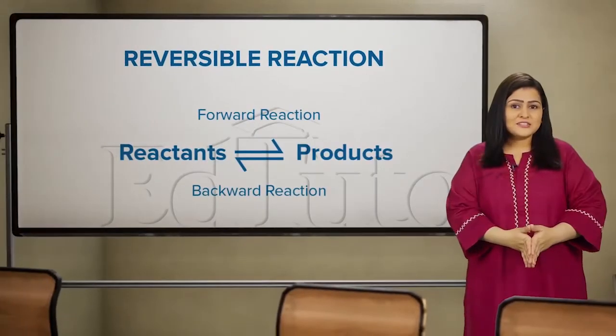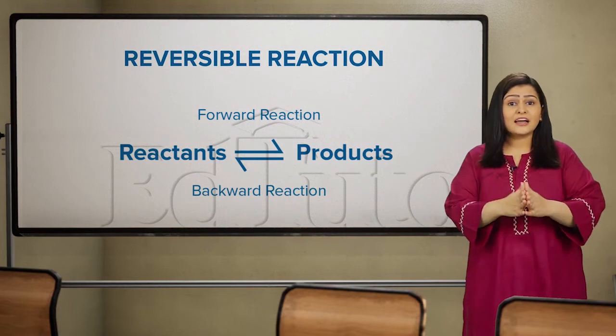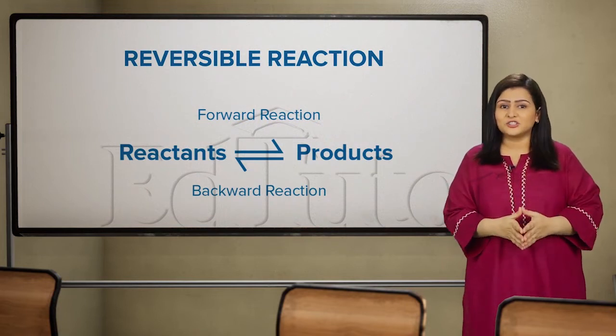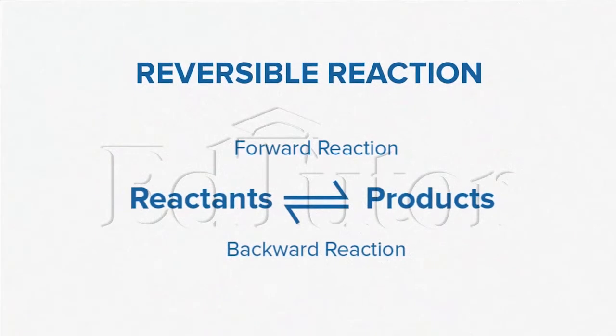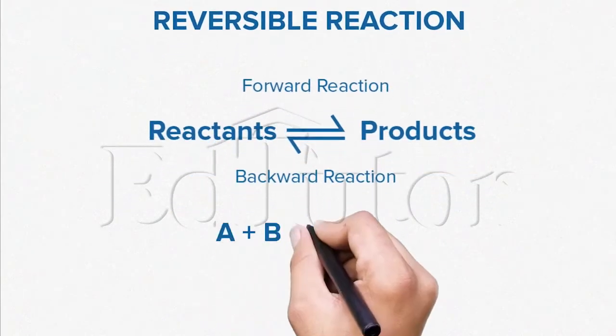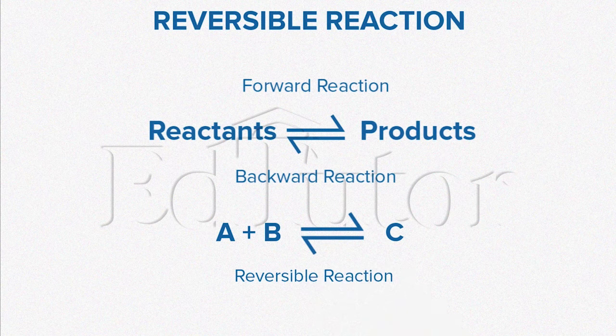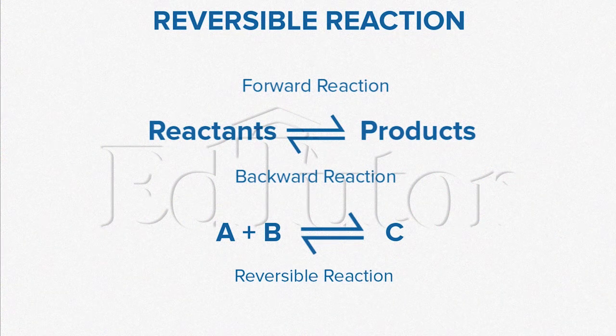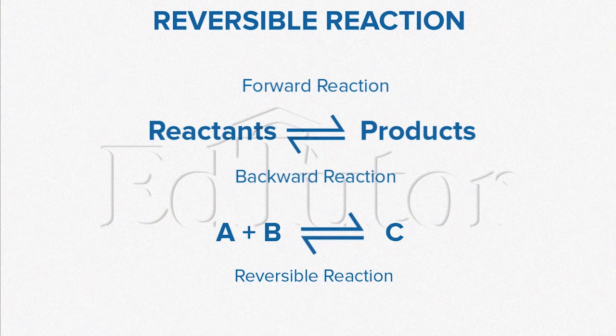In other words, a reversible reaction is where a reaction may proceed in either direction, depending on the conditions. Take a look at this reaction here. The double arrow in this equation shows that the reaction may proceed in either direction.